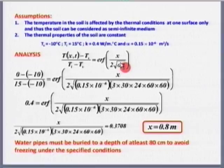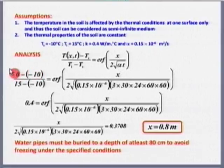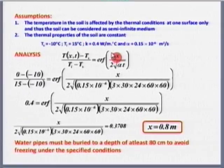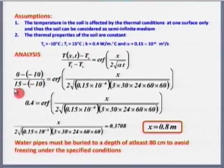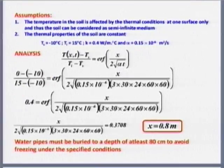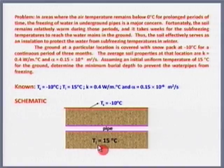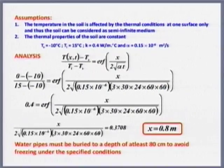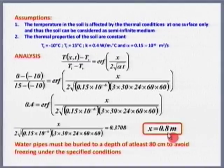We have T_s = −10°C, t = 3 months = 90 days. We want T = 0°C (water freezes at 0°C) at depth x after 3 months. Using (T − T_s)/(T_i − T_s) = erf(x/√(4αt)), substituting gives (0 − (−10))/(15 − (−10)) = erf(x/√(4αt)). Solving, x = 0.8 meters.